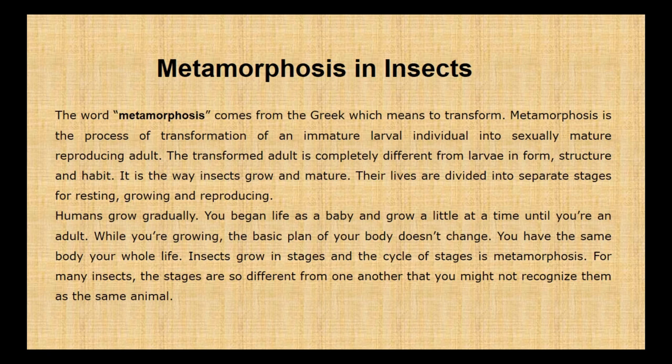Insects' lives are divided into separate stages for resting, growing, and reproducing. Humans grow gradually — you begin life as a baby and grow a little at a time until you're an adult, and the basic plan of your body doesn't change. Insects, however, grow in stages, and the cycle of stages is metamorphosis. For many insects, the stages are so different from one another that you might not recognize them as the same animal.